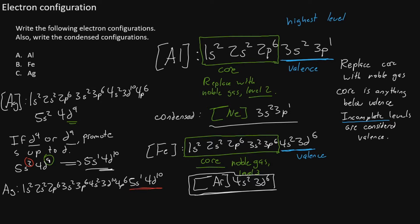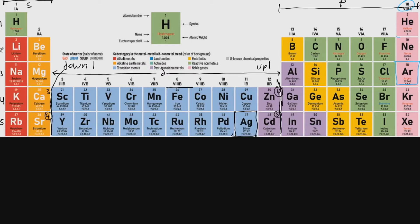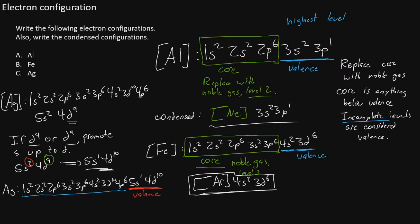Our valence electrons are 5S1 and 4D10. Our core is everything up to 4P6, so we need the noble gas on level 4, which is krypton. For the condensed form, we write krypton in brackets, then 5S1 and 4D10. This is the condensed configuration for silver.